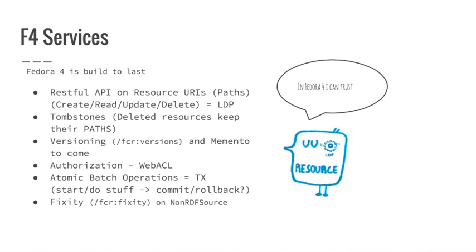We have atomic batch operations — or what people call transactions — that allow us to start a transaction, do a lot of stuff inside it, and when we are ready, commit it. Only at that moment will it really be written inside Fedora 4, and all the events related to that will be broadcast using ActiveMQ. In this atomic batch operation context, everything is transactional: if I put something inside the transaction and then ask for it, I will get the recently added item; but if someone else asks for that asset, it's still not there. So you can do safe operations.